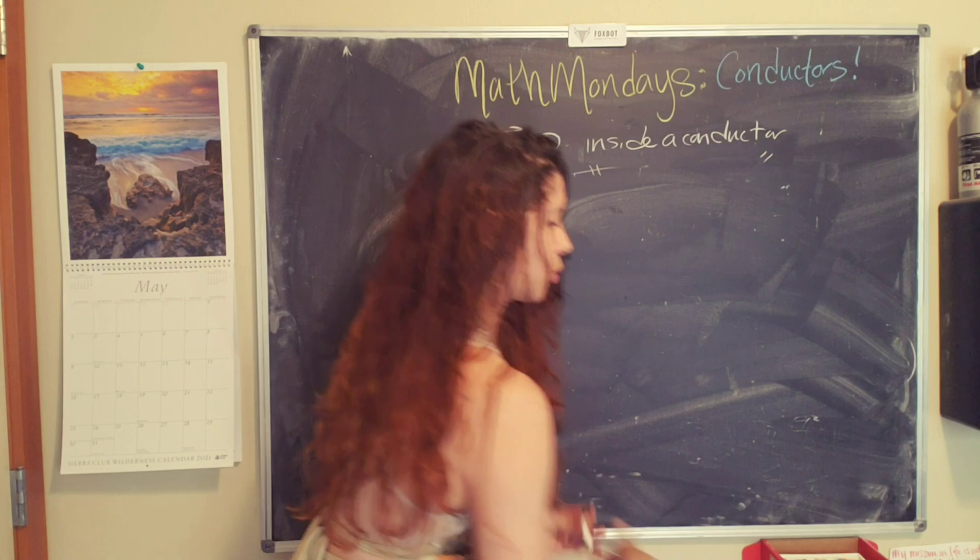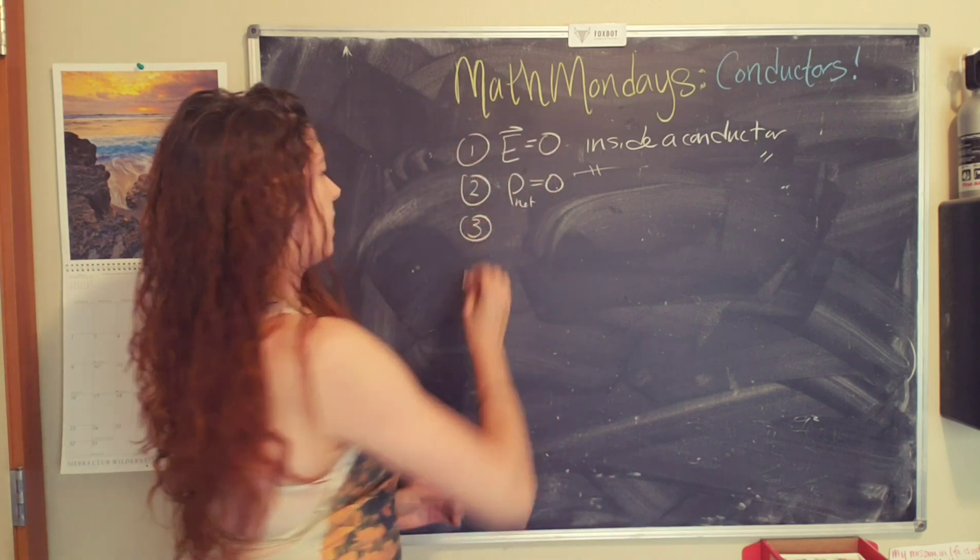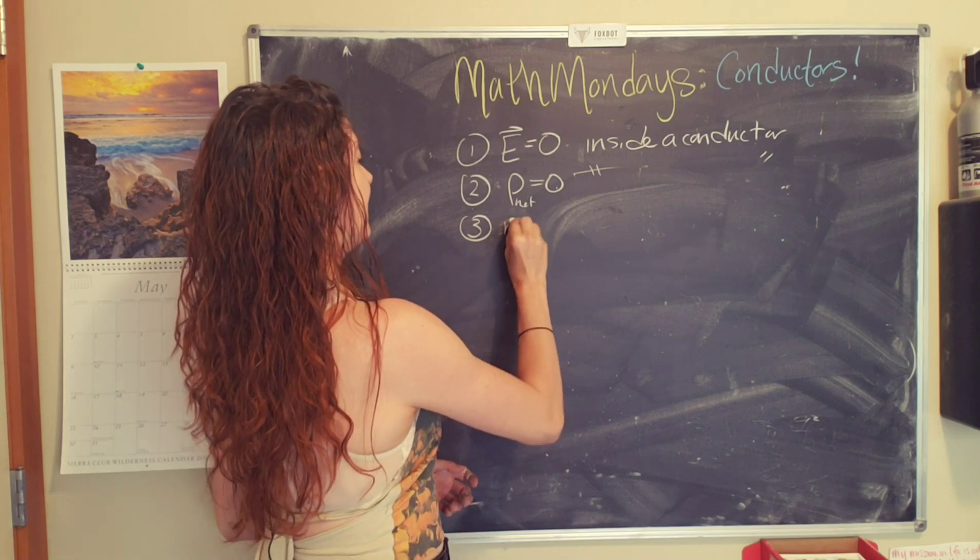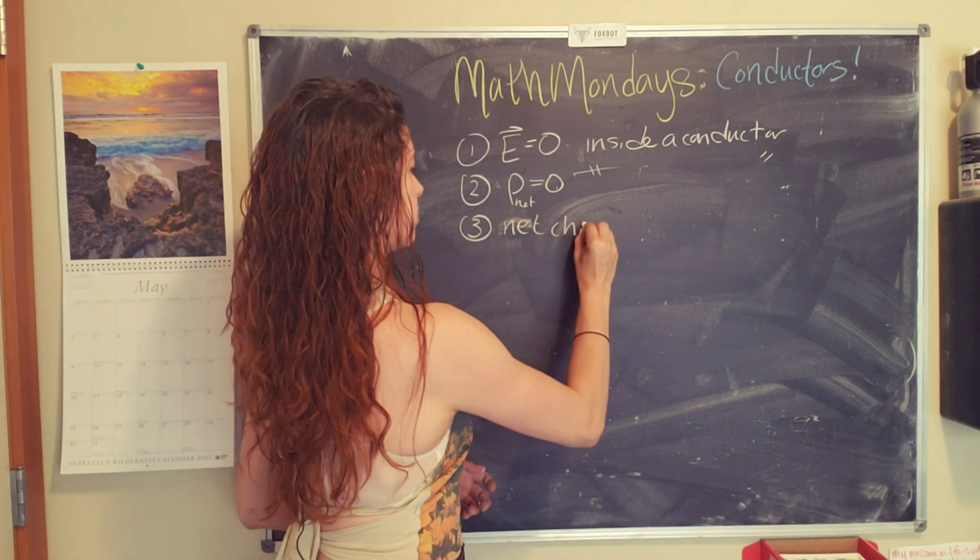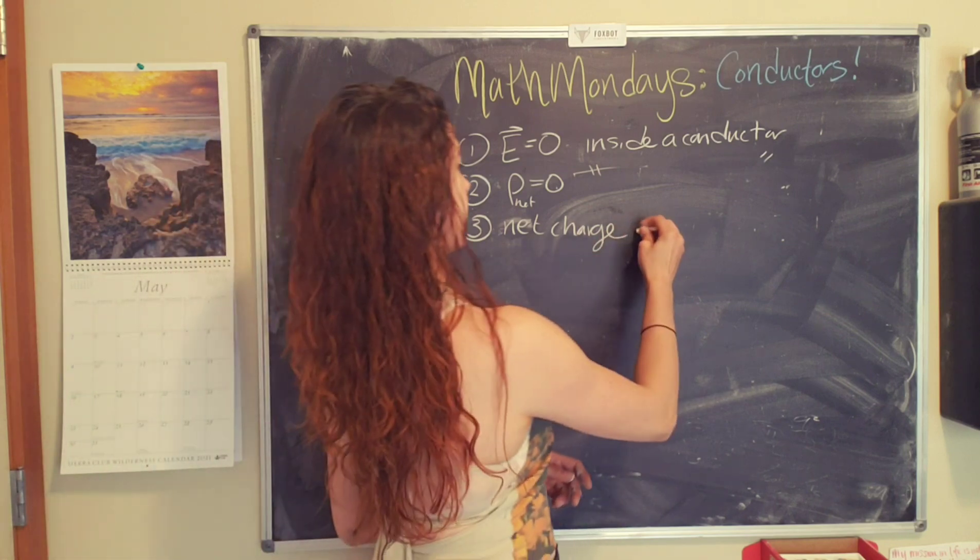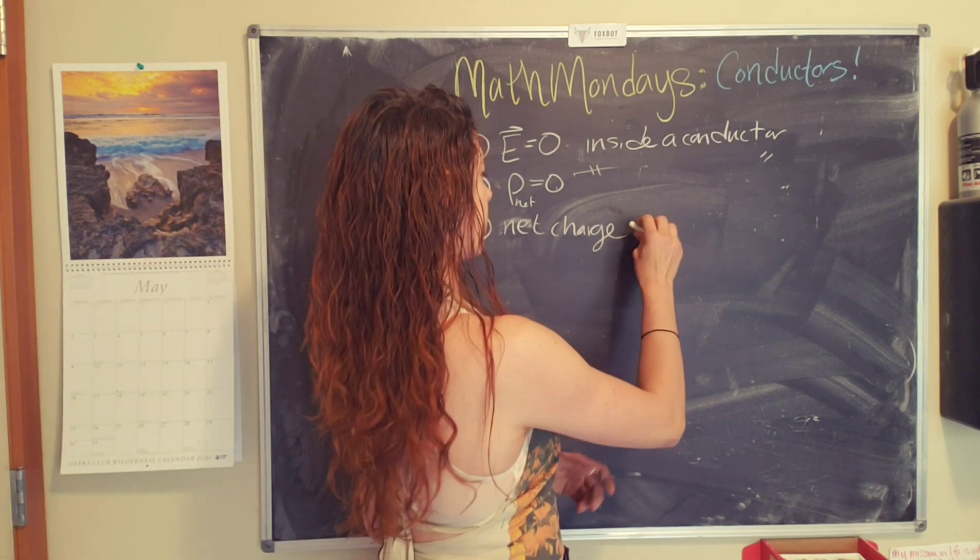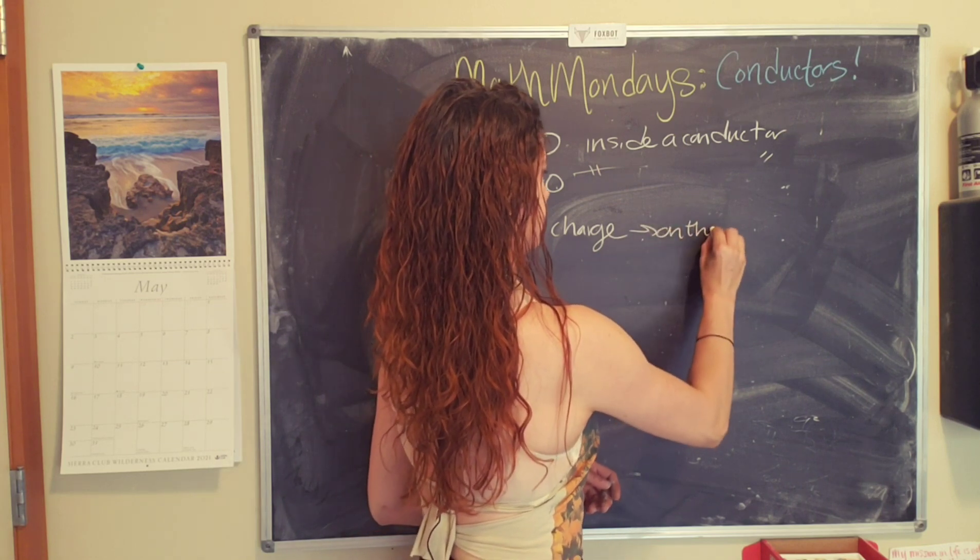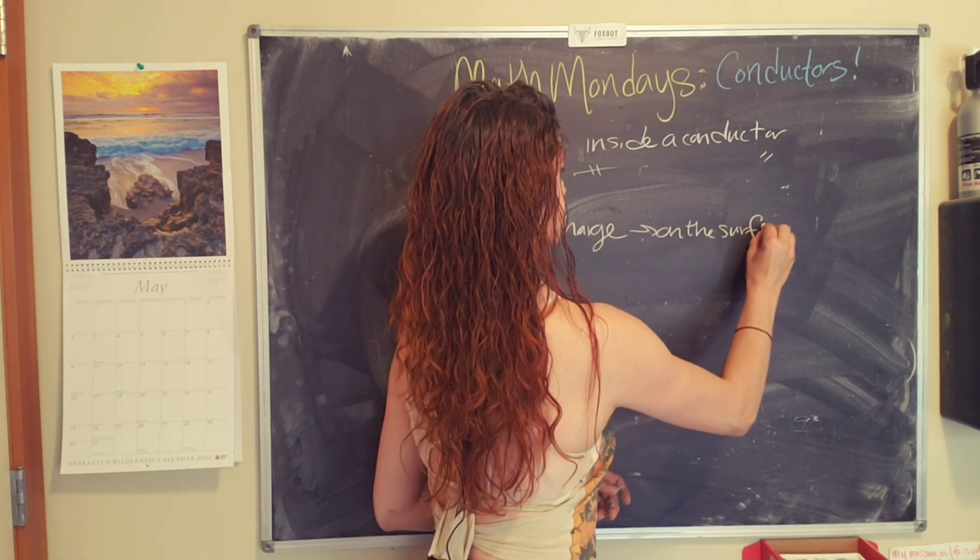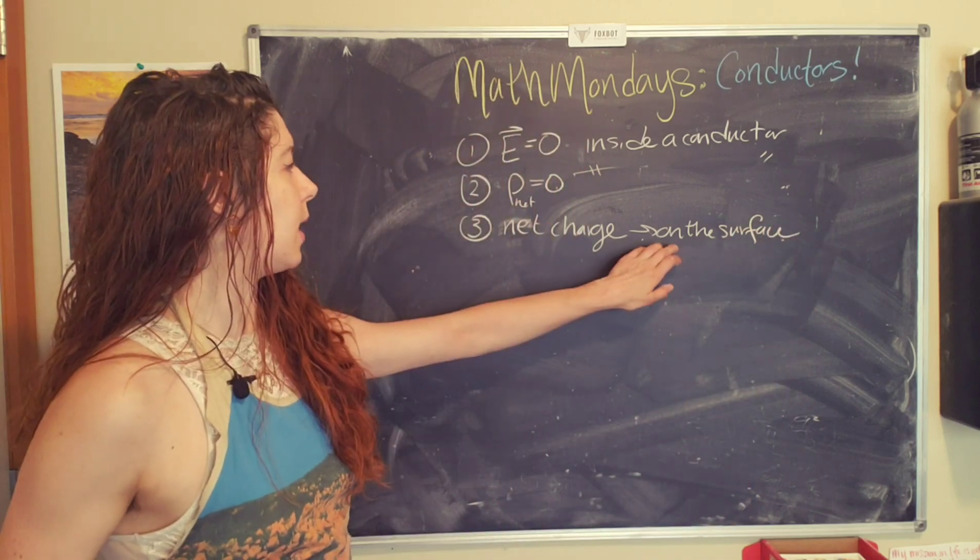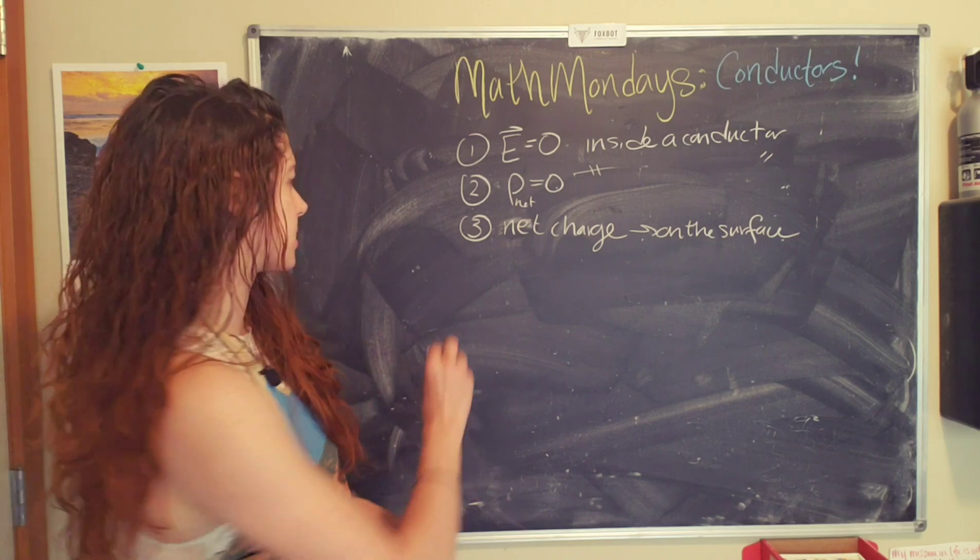Number three, any net charge resides on the surface or hangs out on the surface. This kind of blows my mind. And we'll get to this at the end once we've covered the other ones.